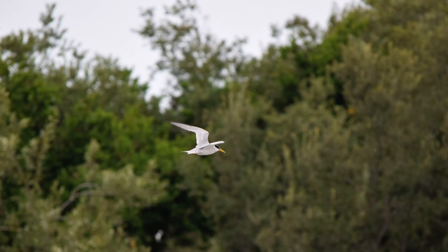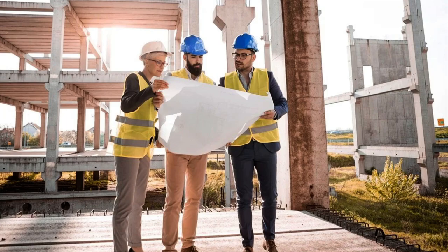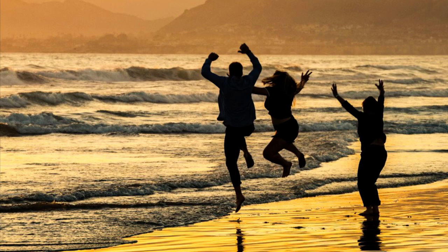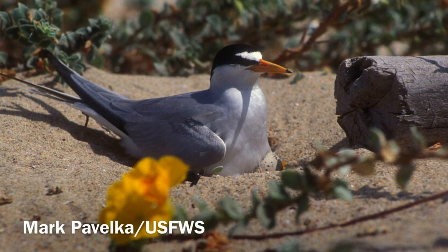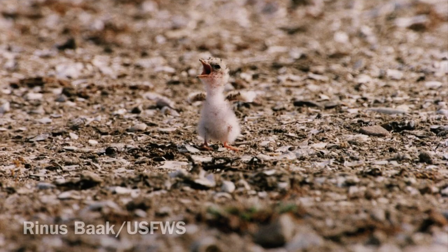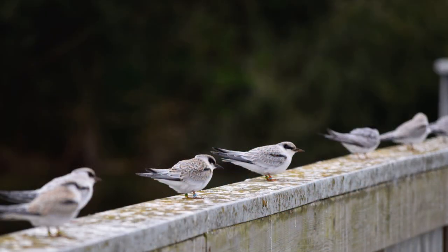Why are California least terns considered endangered? In the 1970s, the California least tern population was incredibly low and there was concern the species could become extinct if it declined further. Habitat loss is one of the main reasons for their population decline — many homes, businesses, and roadways have been built along the California coast in areas where California least terns prefer to nest. Additionally, humans who visit the beach recreate in the same places these birds nest, which can damage the nest and nesting habitat. Therefore in 1970 the California least tern was listed on the Federal Endangered List, and on the California Endangered List in 1971. Through the efforts of many, California least tern populations are becoming healthier and hopefully will continue to grow for future generations.